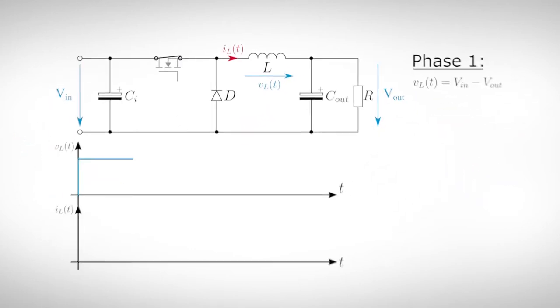During phase 1, the voltage over the inductor is the input voltage minus the output voltage. We assume that the output capacitor is loaded to the desired output voltage and is big enough to hold the voltage during the whole switching process.